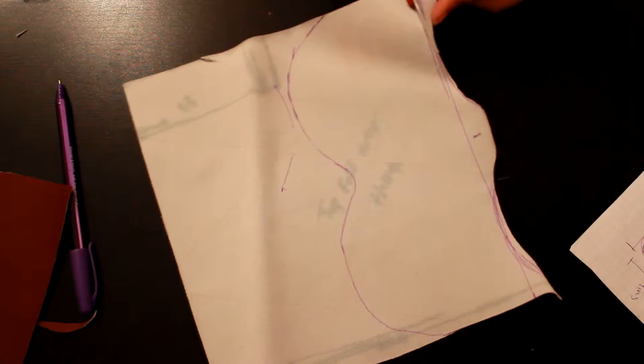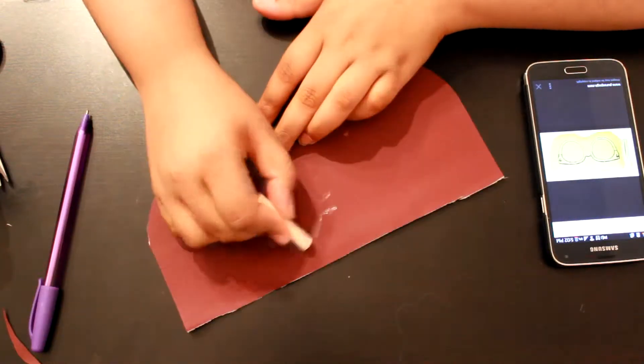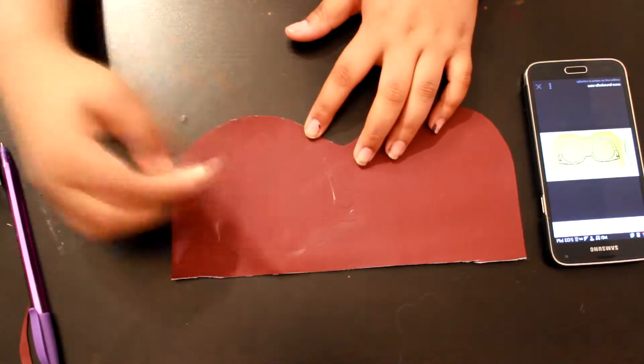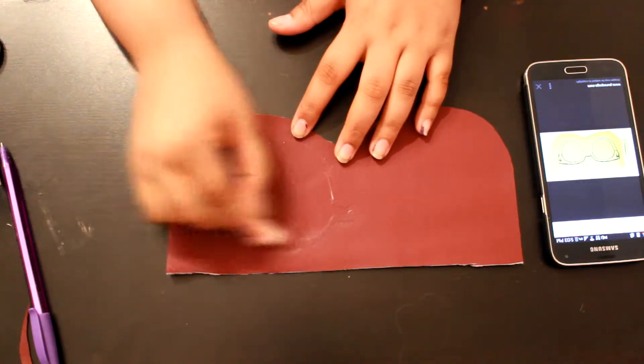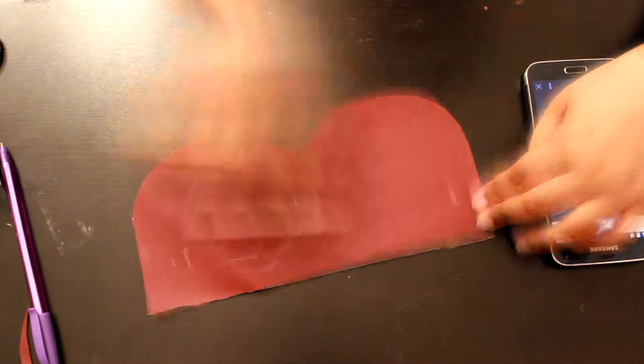Once you've picked a side to be the front, just use chalk to create a sunglass stencil. And once you've done that, you can take the paint and start drawing in your stencil.